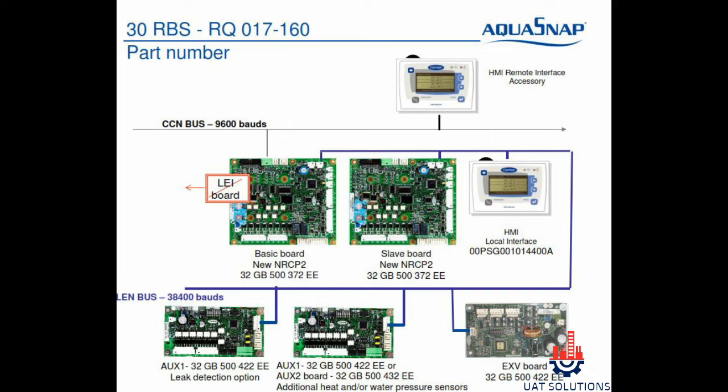HMI local interface is the display controller used to access the parameters and configuration. O boards are used for additional heating systems. The expansion valve board is used only in models from 039 to 160. All boards communicate to the main board via LEN bus, as the blue line is shown connecting all boards in the video.